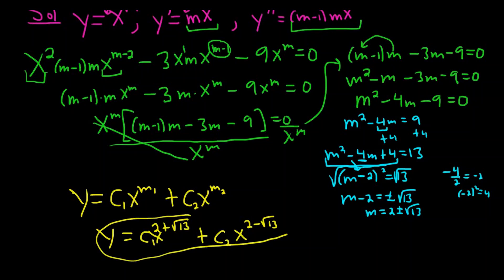So that would be your final answer. So let me write it again up here. It would be c1 x to the 2 plus square root of 13, plus c2 x to the 2 minus square root of 13.